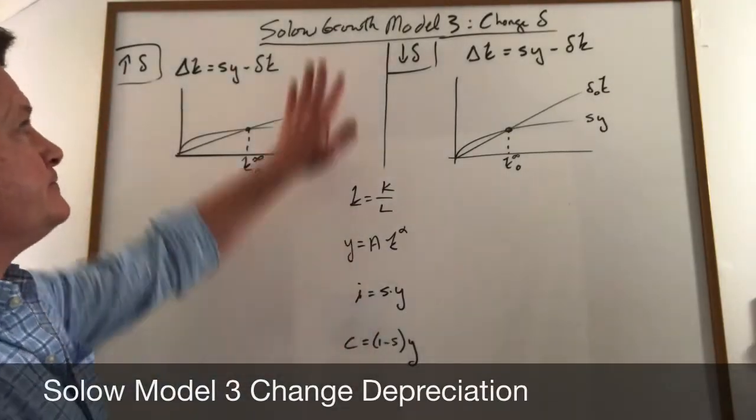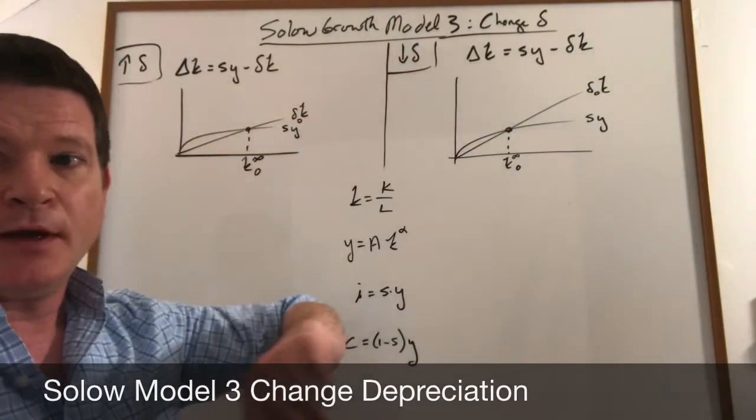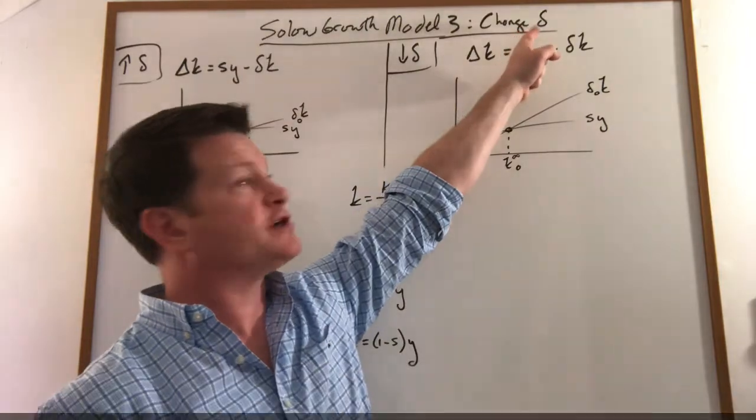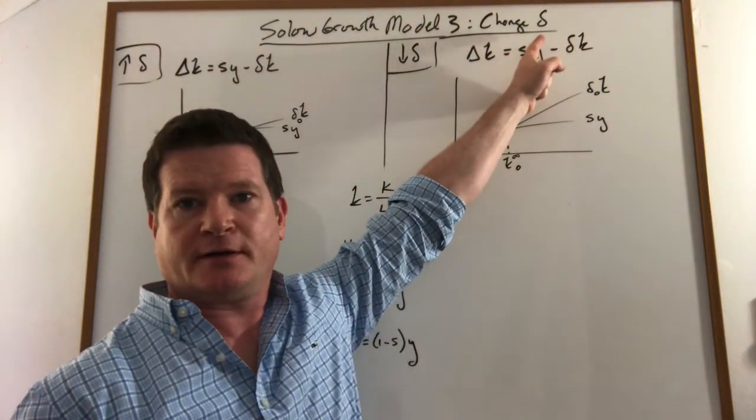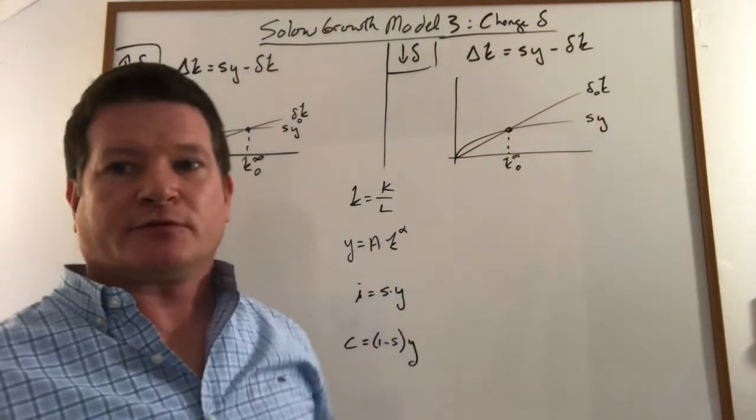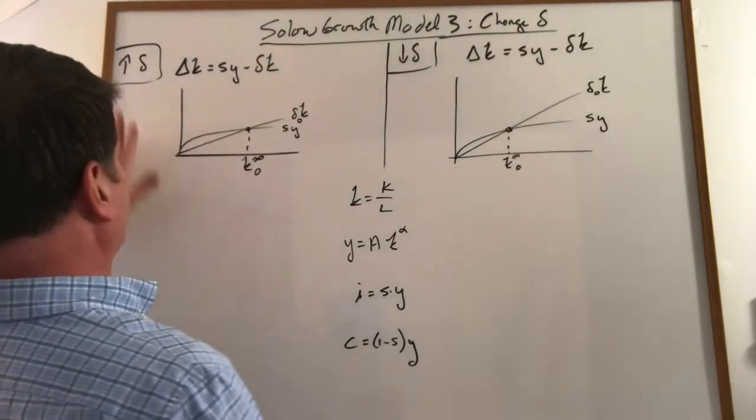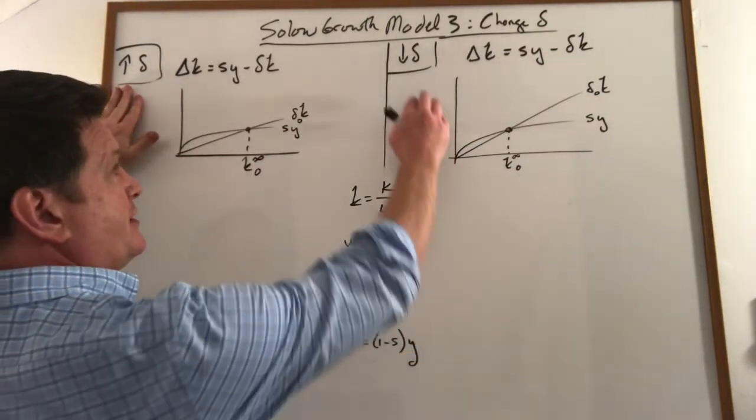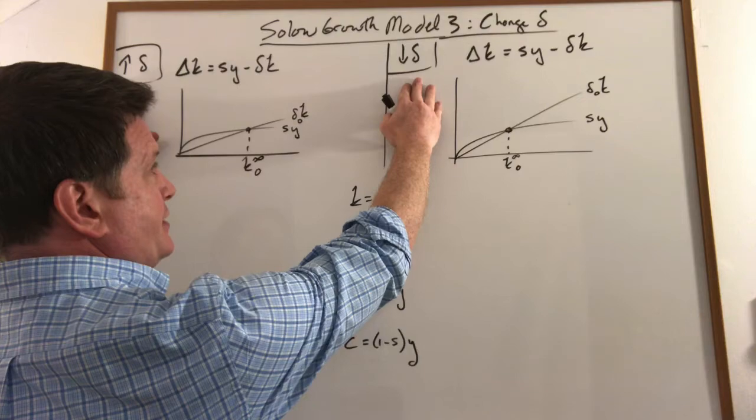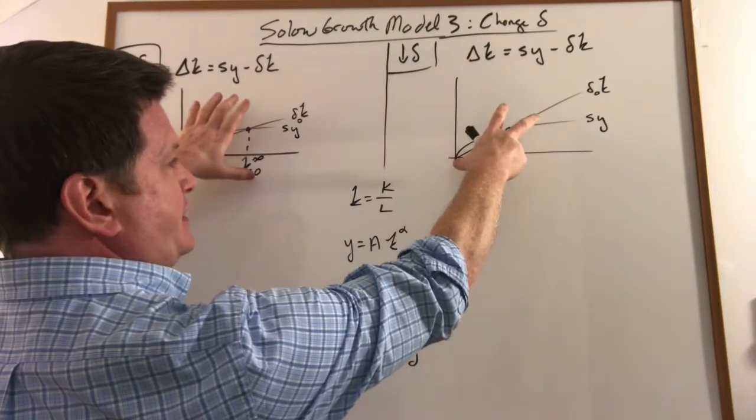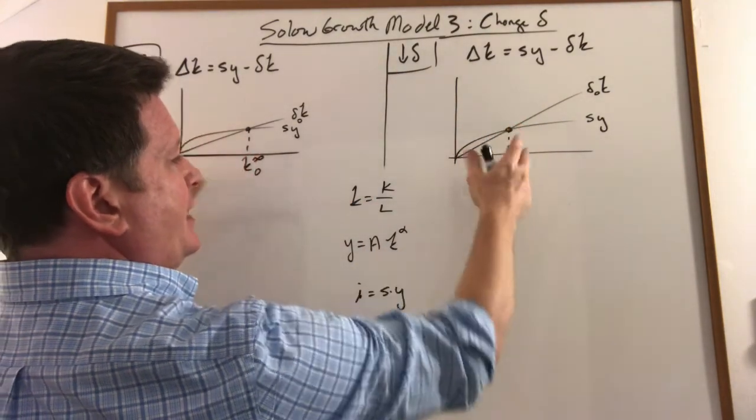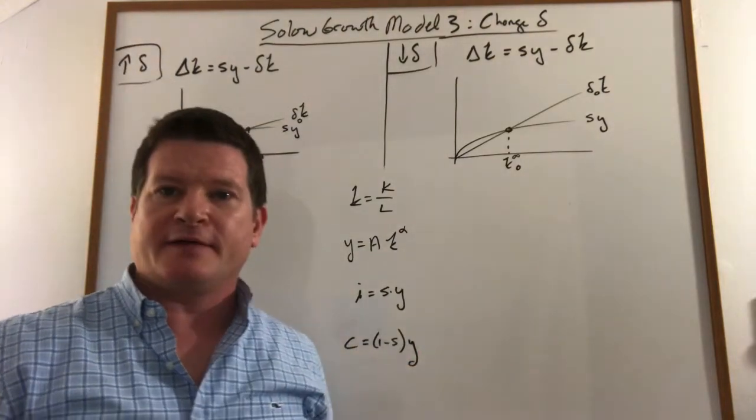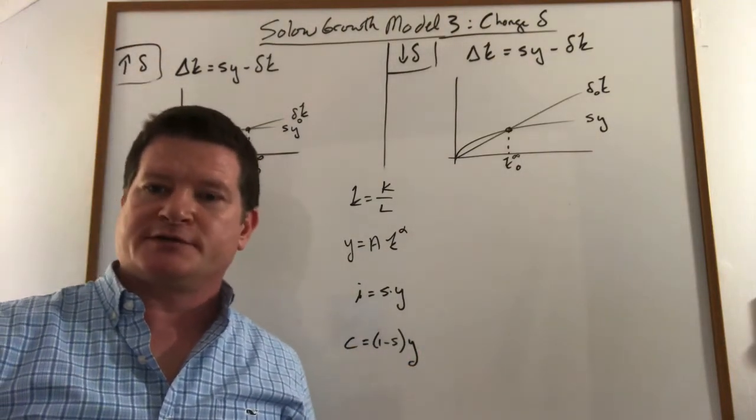This lecture looks at the Solow growth model and we're going to trace through a change in the depreciation rate. I'm going to do it simultaneously: an increase in the depreciation rate and a decrease in the depreciation rate. I'm going to trace it through the key graph and diagram of the Solow growth model and trace out the time paths of each of the variables we're interested in.